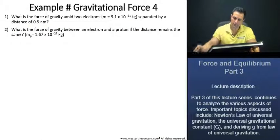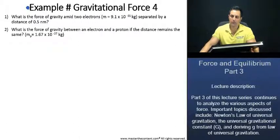Example, gravitational force 4. What is the force of gravity amid two electrons with mass 9.1 times 10 to the power of negative 31 kilograms, separated by a distance of 0.5 nanometers? Secondly, what is the force of gravity between an electron and a proton if the distance remains the same? The mass of the proton is 1.67 times 10 to the power of negative 27 kilograms.